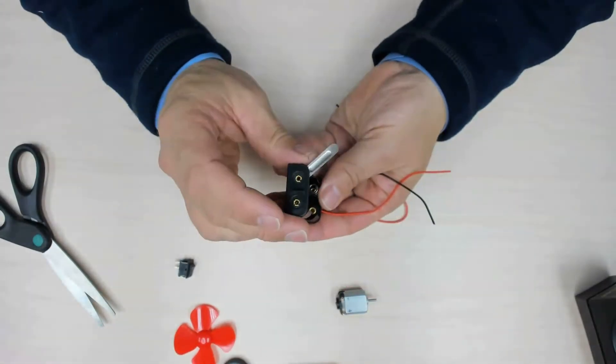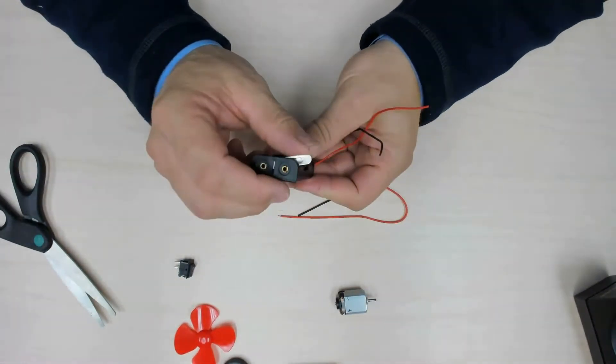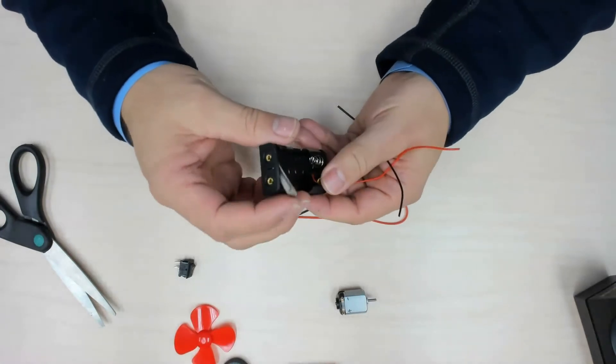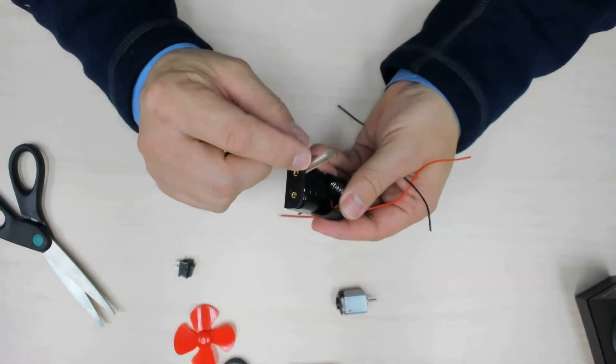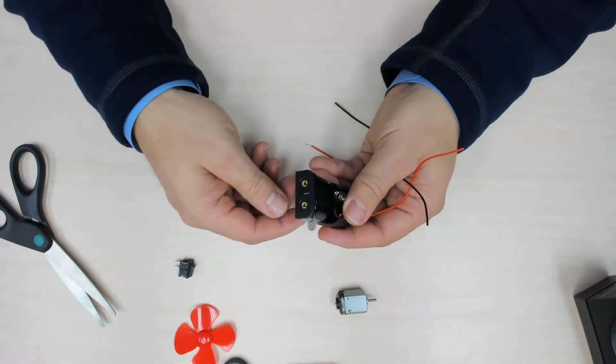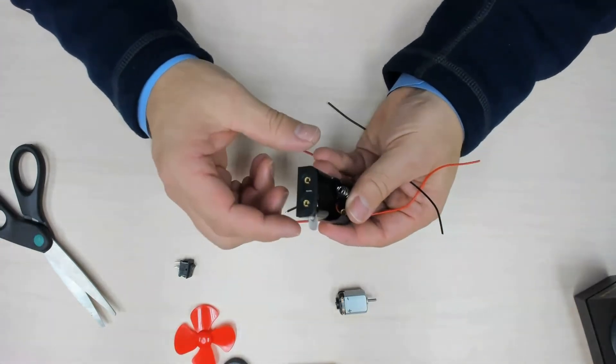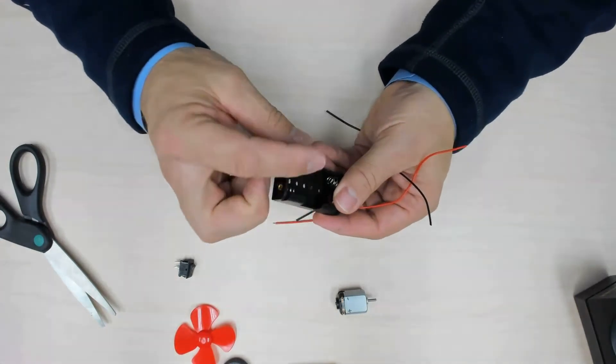When we look at the battery holder, we have a switch. This is closed, this is open. Open circuit means no electricity can flow. A closed circuit is when electricity can flow. When we're going to install the batteries, we'll always have this open.